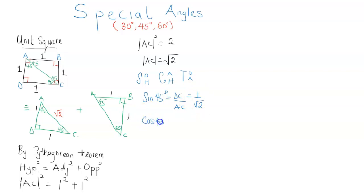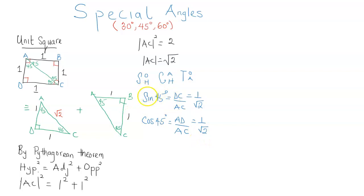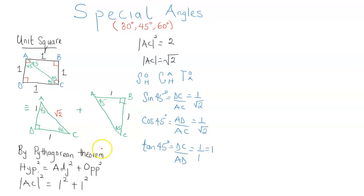Similarly, cos 45 degrees, still focusing on the 45 at angle A, is the ratio of the adjacent to the hypotenuse. AD is the adjacent, which is one, and AC the hypotenuse is root two. So we can see that sine 45 has the same value as cos 45. Finally, tan 45 degrees — focusing on the 45 at A — we need its opposite and its adjacent. The opposite is DC and the adjacent is AD. This gives one over one, which equals one. So tan 45 equals one.